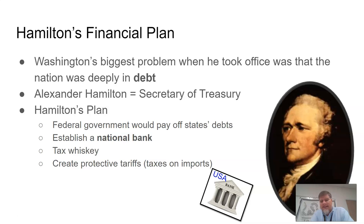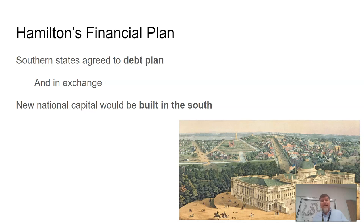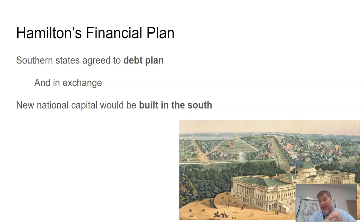We'll talk about the tax on whiskey and tariffs in a later video. As for the state debts, ultimately they do get paid off, but the southern states demand a compromise: they want the capital to be located in the South. Washington, D.C. is built in Maryland, right on the Potomac River on the border of Maryland and Virginia. The southern states agreed to go along with the financial plan to pay off the debts in exchange for moving the capital there — from New York to Washington, D.C. — where the White House and Capitol building would be built. Notably, George Washington never lived in the White House; it was not complete until after his two terms ended. That is Hamilton's financial plan, and we'll continue to look at these issues over the next few days.